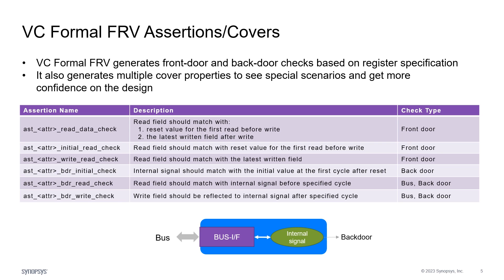VC Formal FRV creates expected data based on the field access type and bus write requests. Whenever the bus sends a read request, it compares the bus read data with this expected data. Users can also split these checks into two: an initial read check or write read check based on the configuration parameter. VC Formal FRV also supports internal checks where the user provides backdoor signals in the register spec. For example, BDR initial check compares the backdoor signal with the internal value only for the first cycle after reset. BDR read check compares the read data with the internal signal before the specified cycle. BDR write check ensures that the write data from the bus interface is reflected in the internal signal after the specified cycle.